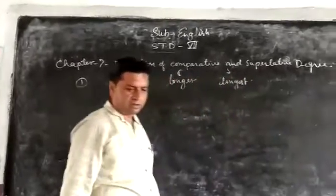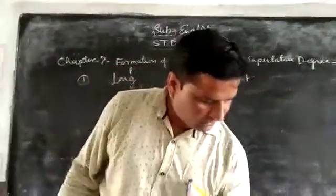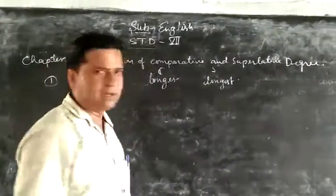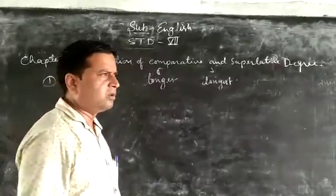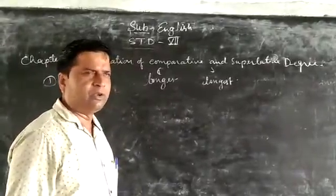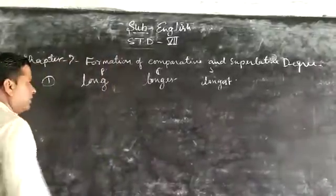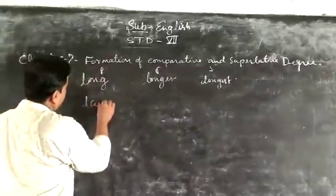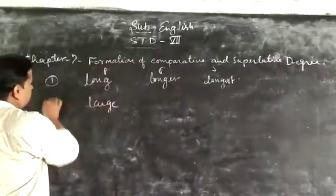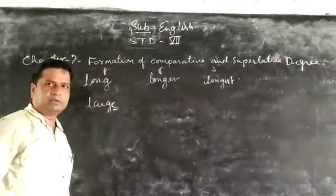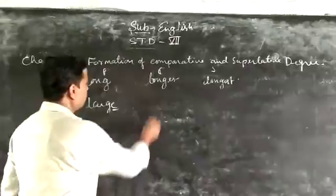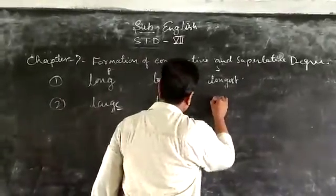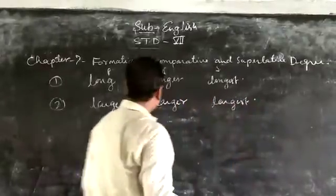The second point is that if an adjective ends in E, you write only R and ST to make them comparative and superlative respectively. You can see that this adjective ends in E.